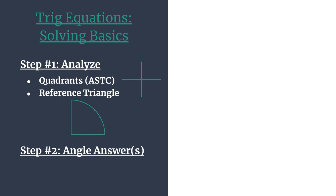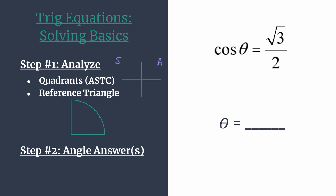Let's go ahead and solve cosine theta equals positive square root 3 over 2. The first part of our analysis step is to find which quadrants we're in, and we're going to do this with the acronym ASTC — think 'all students take classes.' This acronym helps us recall which trig functions are positive in each quadrant, labeling starting in quadrant 1 and working your way around.